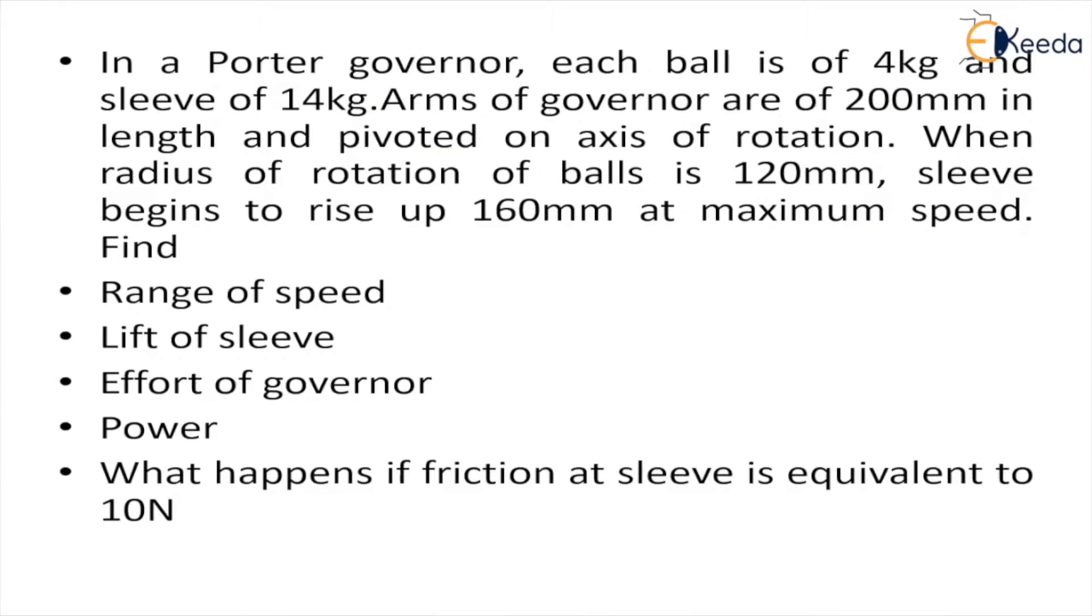We'll take the case of a Porter governor. The mass of each pole is given which is 4 kilogram, mass of sleeve is 14 kilogram, length of arms is given which is 200 mm and they are pivoted on axis of rotation. This is very important.